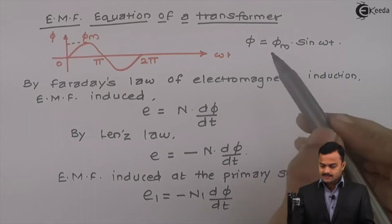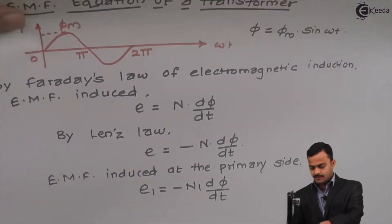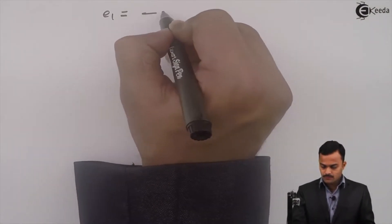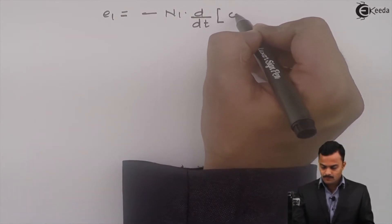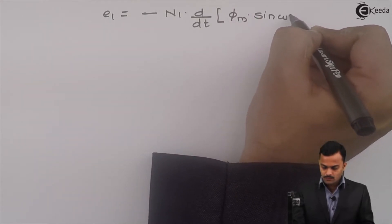Let's substitute phi equal to phi m sine omega t over here. I will get E1 equal to minus n1 d by dt of phi m sine omega t.